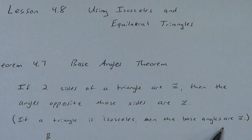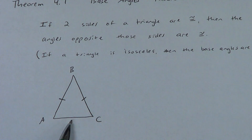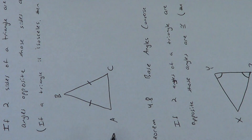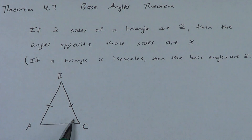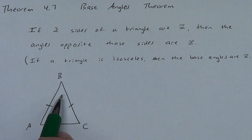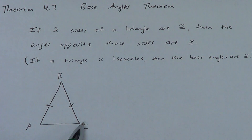Why do we call them the base angles? When we have a picture like this, these two sides are called the legs, and this down here is called the base. The base does not have to be at the bottom — if my triangle is facing a different way, these are still the legs and this is still the base. The base angles are the two angles that touch the base side. The angle up here that does not touch the base side is not called a base angle. Our book usually refers to this as the vertex angle.